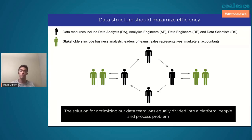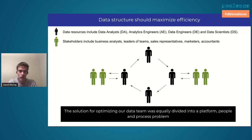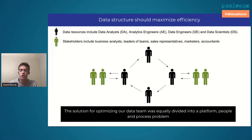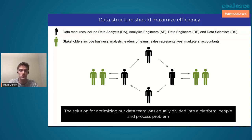The first is a platform problem — what are the tools we're using to help the data team work together? We actually use dbt to help all of our data roles interact and speak the same language. The next two parts of the problem are really what I want to address today, which is that it's a people and a process problem as well. The people part is how do we organize the team, and the process part is what are the rules of engagement between the team and the business stakeholders.